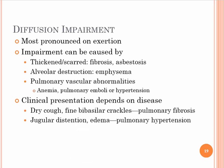Diffusion impairment is most pronounced on exertion — when you get up and want to go do something, that's when you get short of breath. This impairment can be caused by scarring of the AC membrane, like in fibrosis or asbestosis. For the obstructive process, alveolar destruction caused by emphysema can also lead to this. Pulmonary vascular abnormalities — including anemia, pulmonary emboli, or pulmonary hypertension — can also influence this. Clinically, restrictive diseases with a thick AC membrane often present with a dry cough and fine basilar crackles, as in pulmonary fibrosis.